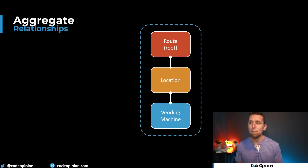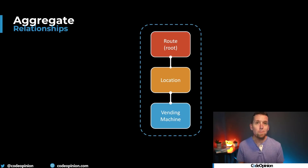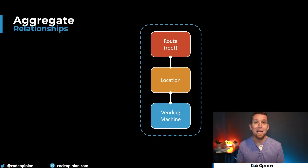Here's the example given by a member on my private Discord server. Let's say we have a route — you can think of this as like a bus route — and there are many different locations on our route. For each different location there's a single vending machine. These vending machines may be emitting event data or telemetry data, like the temperature, as well as maybe when somebody purchases something there's a sale, it's emitting that.